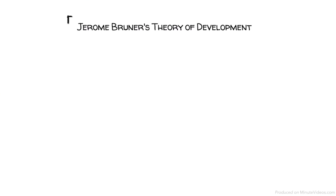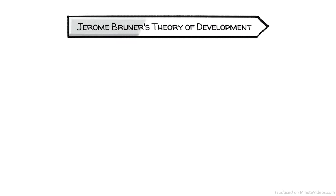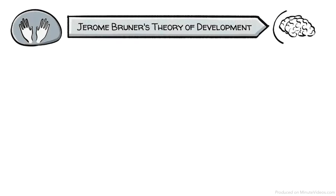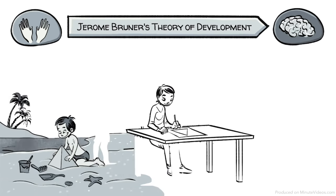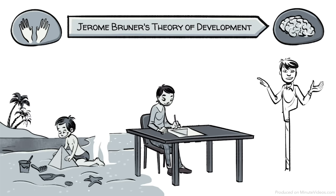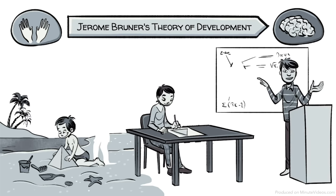Jerome Bruner's theory of development is based on the assumption that we learn best when we go from concrete to abstract in a three-step process. First comes hands-on action, then learning with images, and finally students transform what they've learned into language.